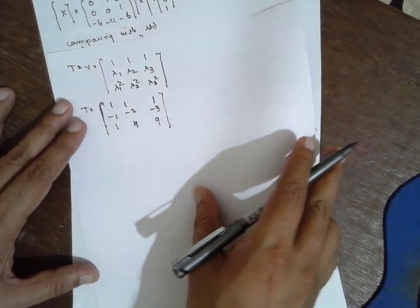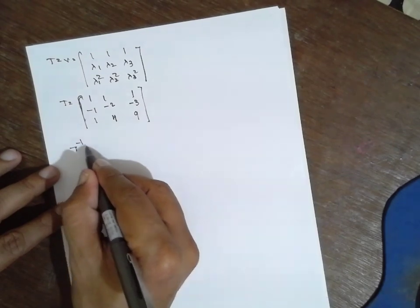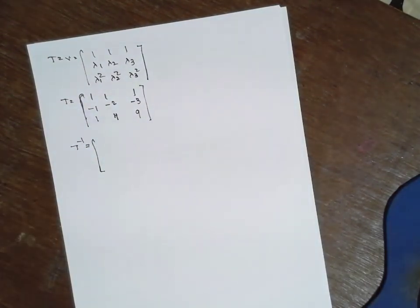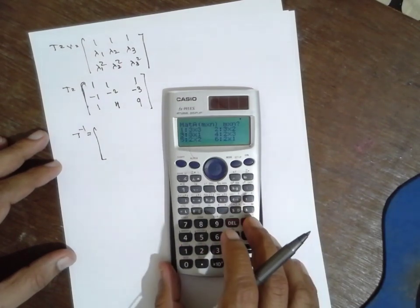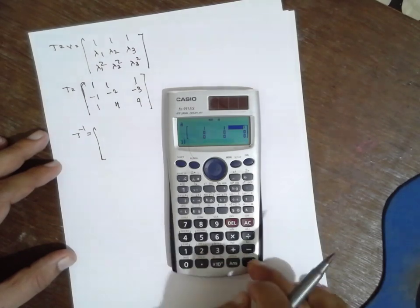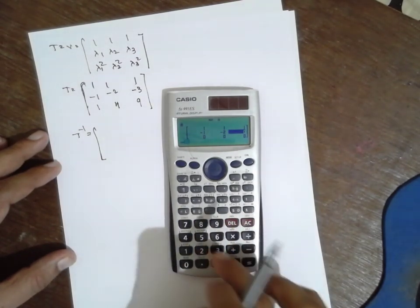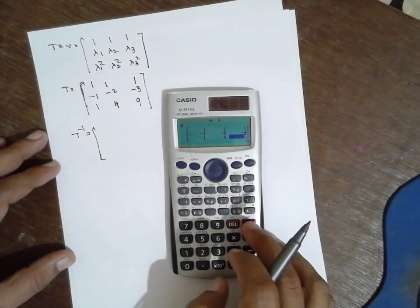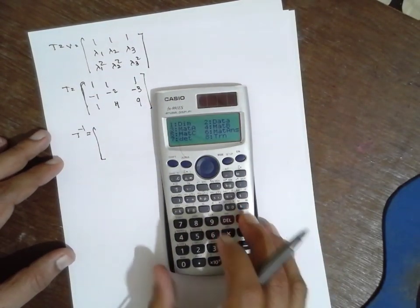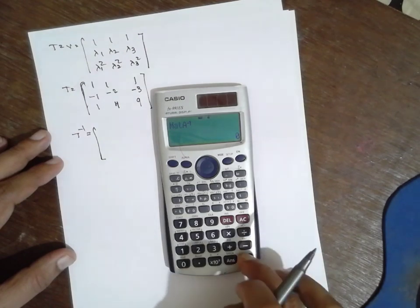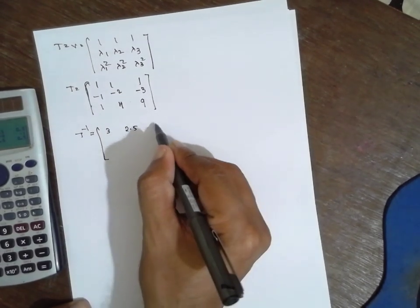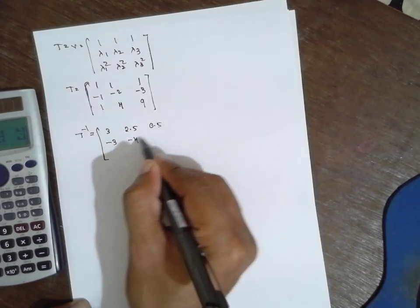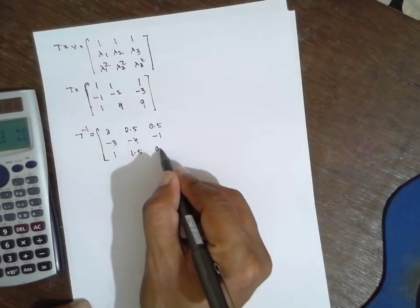After completing the Vandermonde matrix, we need to find its inverse T⁻¹. Using a calculator with the matrix [1,1,1; -1,-2,-3; 1,4,9] and pressing AC Shift 3 for inverse, the answer obtained is: T⁻¹ = [3, 2.5, 0.5; -3, -4, -1; 1, 1.5, 0.5].